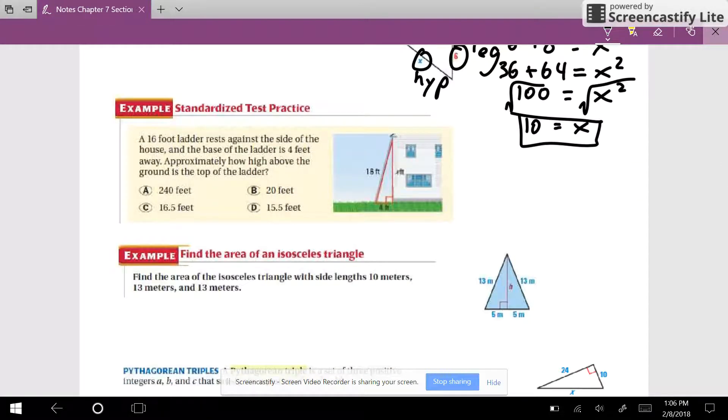So now if we look at this next problem, we've got a ladder, a 16-foot ladder rests against the side of the house. The base of the ladder right here is 4 feet away from the house. We know the ladder itself was 16. We assume that the house is perpendicular to the ground, and we're trying to find the height of the house. So this time we know the hypotenuse. We know one of the legs is 4. We're trying to find the other leg.